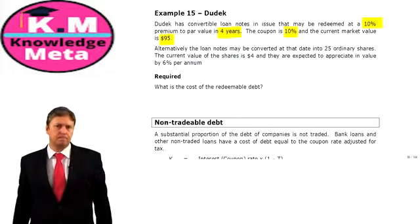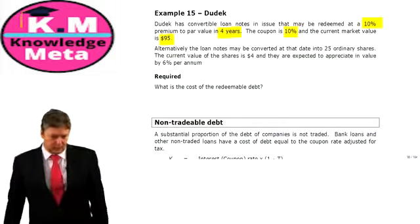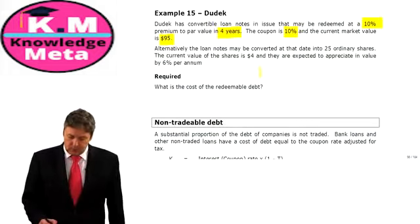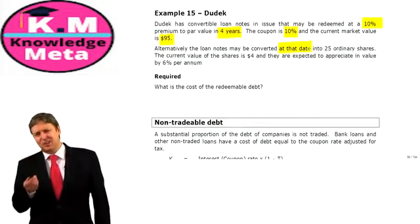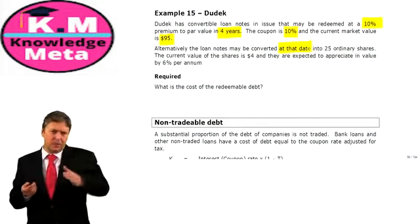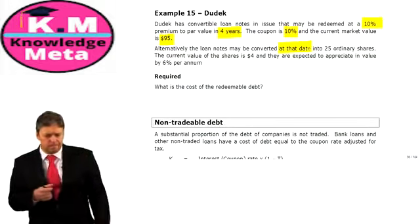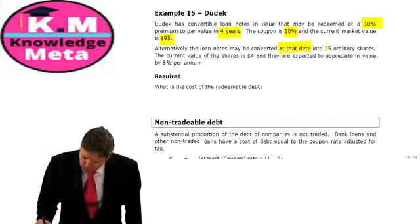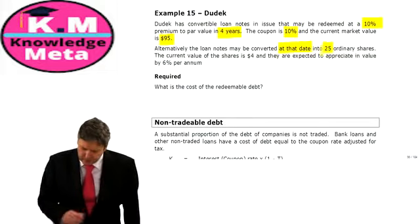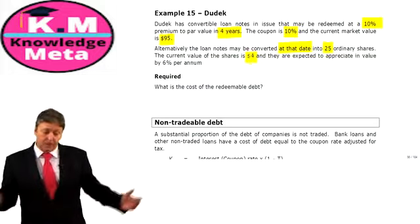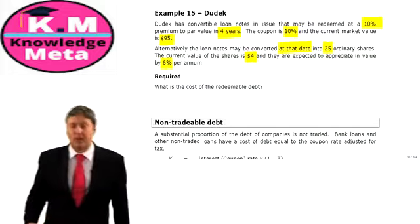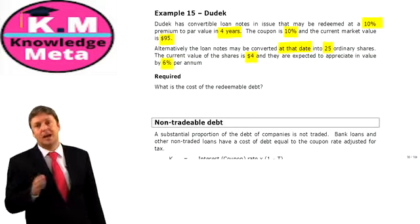Now the fun bit. Alternatively, the loans may be converted at that date — the examiner tends to make conversion and redemption occur at the same date to avoid complications. Conversion is into 25 ordinary shares, with the current share value at $4, and shares are expected to appreciate in value by 6% per annum.